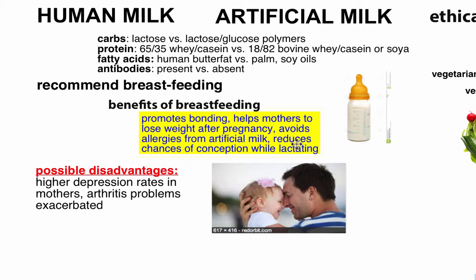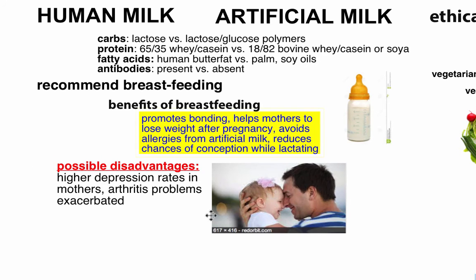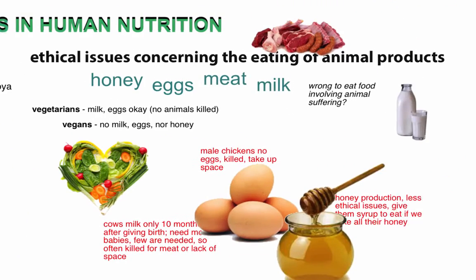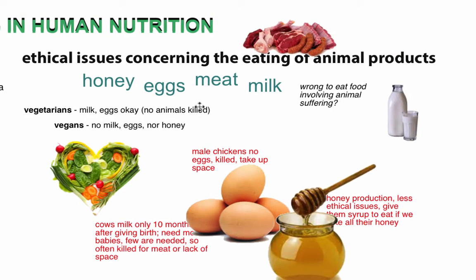Breastfeeding could also reduce the chances of conception while lactating. While the mother is breastfeeding, there is some inhibition of her menstrual cycle, reducing her chance of getting pregnant again — which is good for the baby, prolonging the time before a sibling arrives. Possible disadvantages include that when breastfeeding stops, there have been recorded higher rates of depression, and arthritis problems could be exacerbated as well.